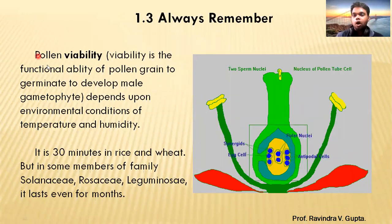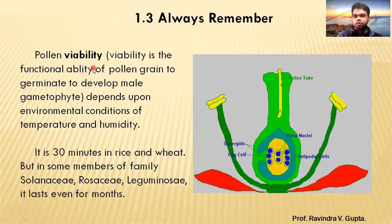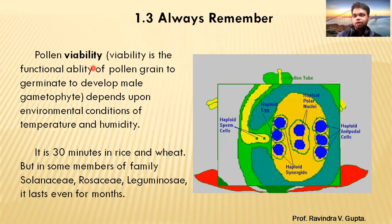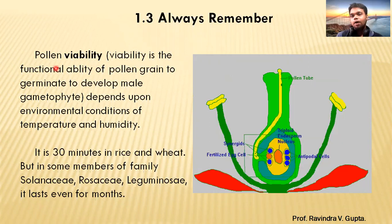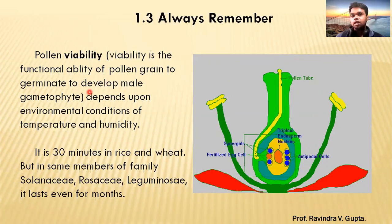Now, pollen viability. Viability means the condition of remaining alive — viable means alive. So pollen viability is the functional ability of the pollen grain to germinate and develop a male gametophyte, which depends upon the environmental conditions — that is, temperature and humidity.